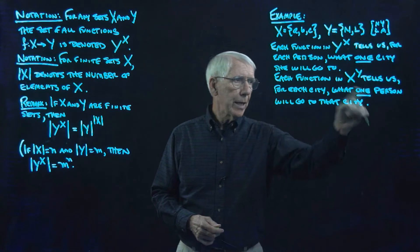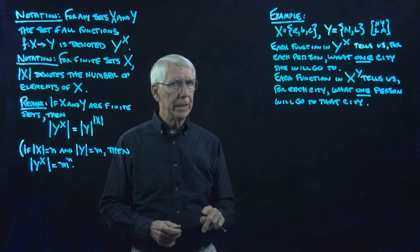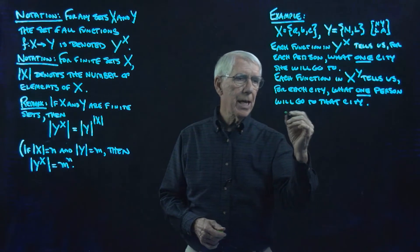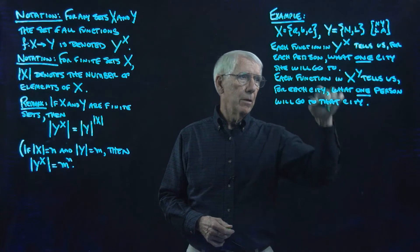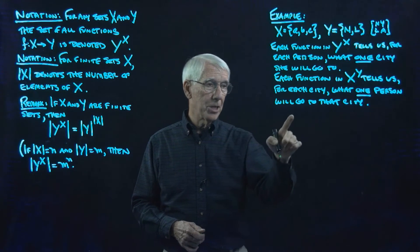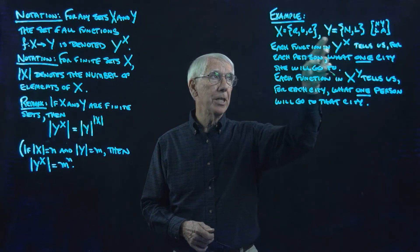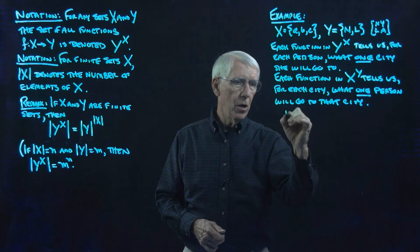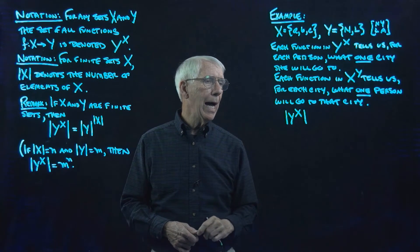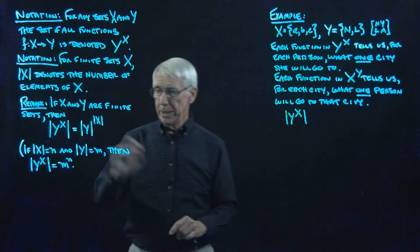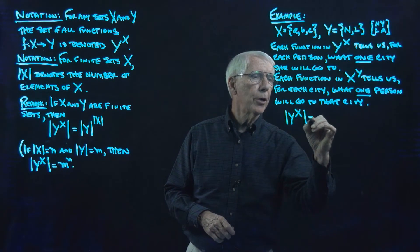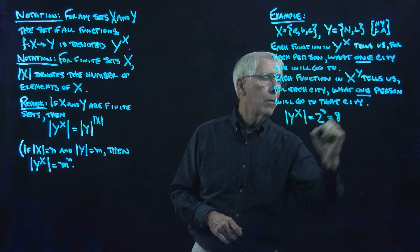In both cases, a function has to assign only one thing to each element of the domain. The fact that I'm interpreting this as people and cities isn't really the important point — it's simply that there are three elements here and two elements here. So we know that the set of all functions going from x to y is going to be 2 cubed, 2 to the third, which is 8.